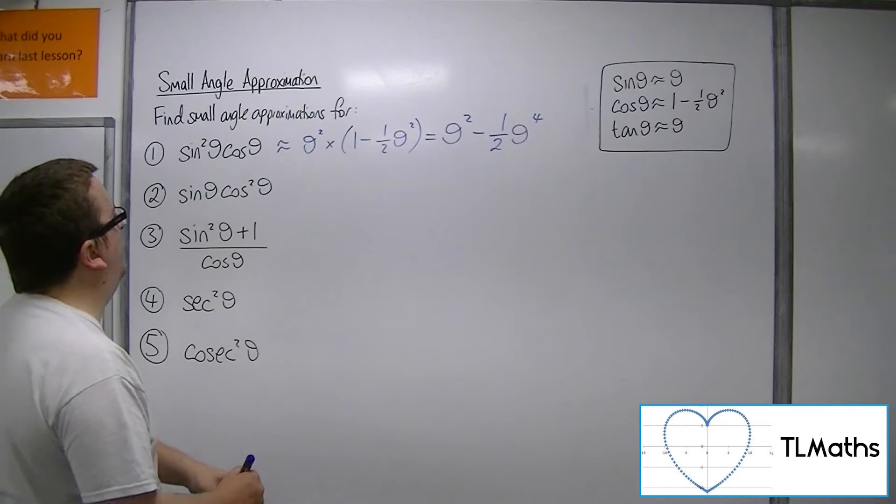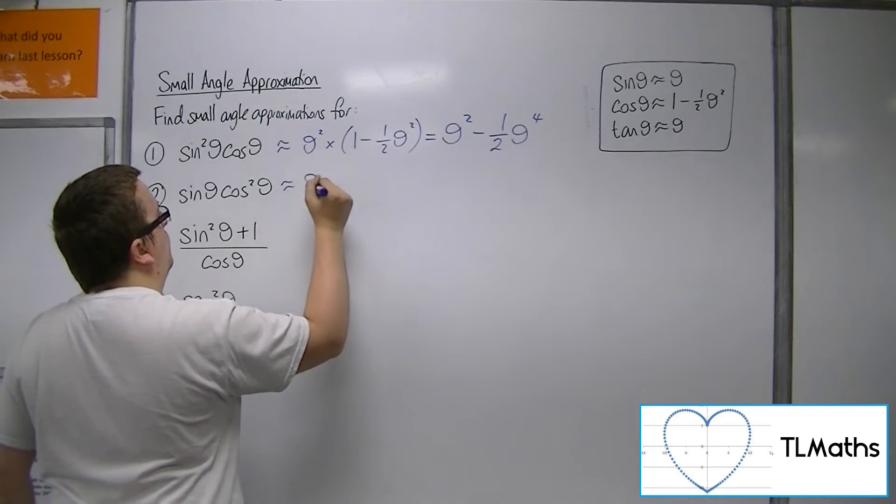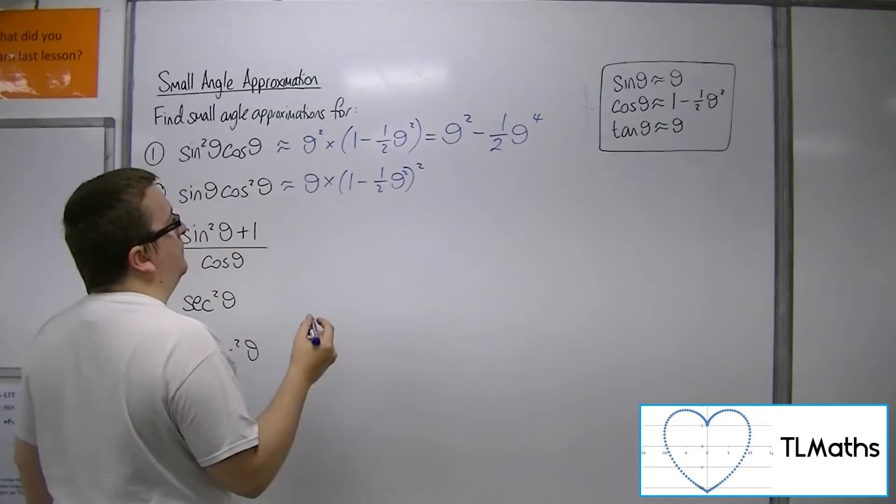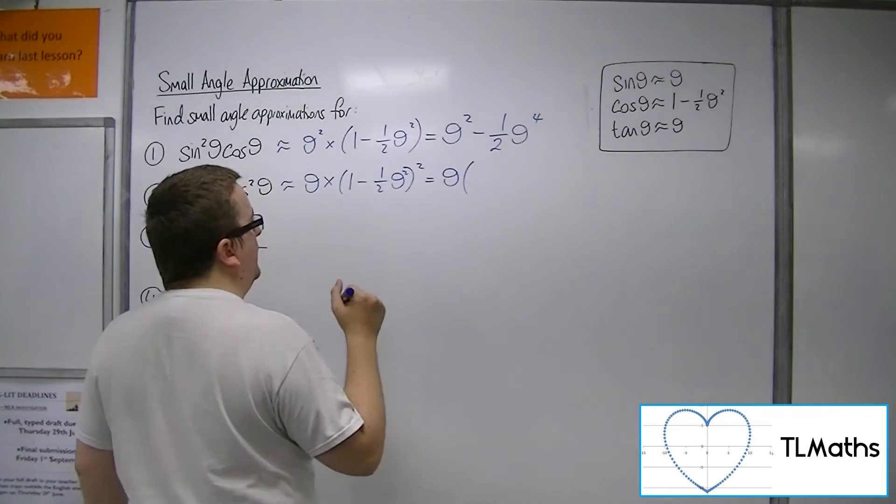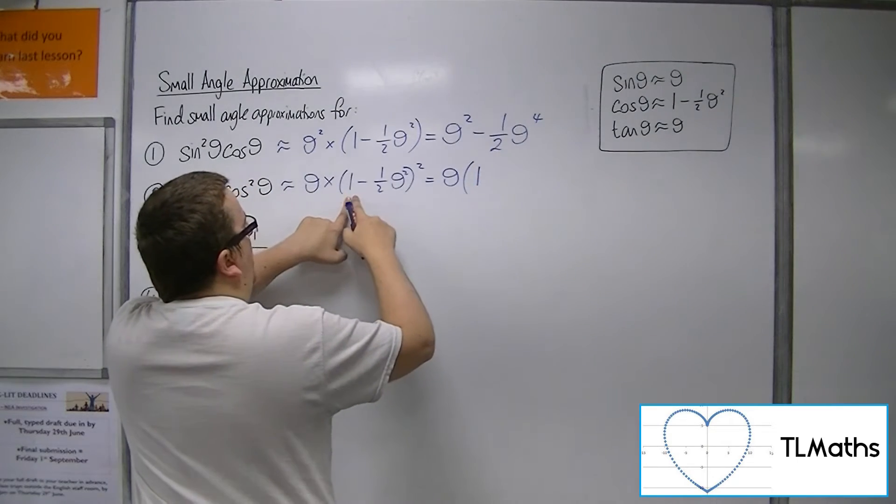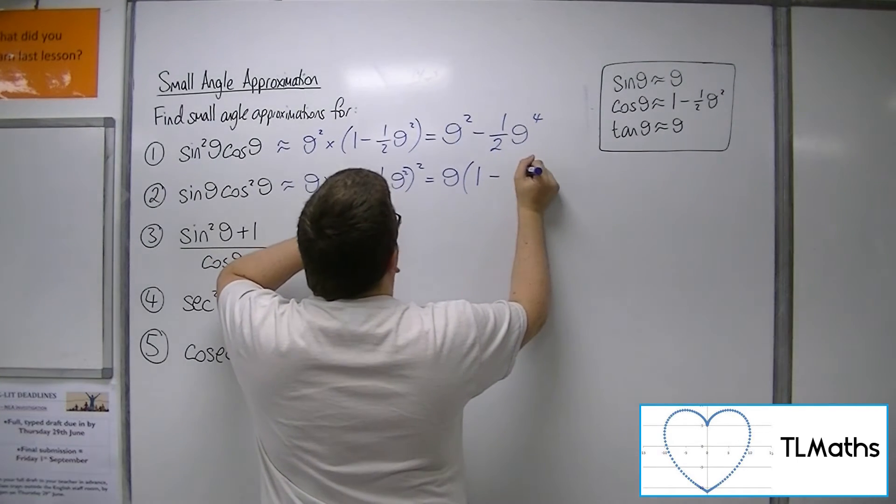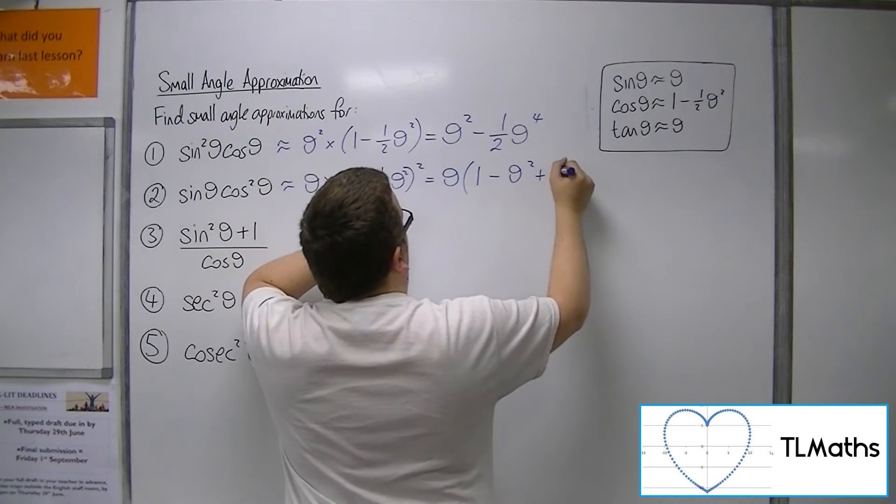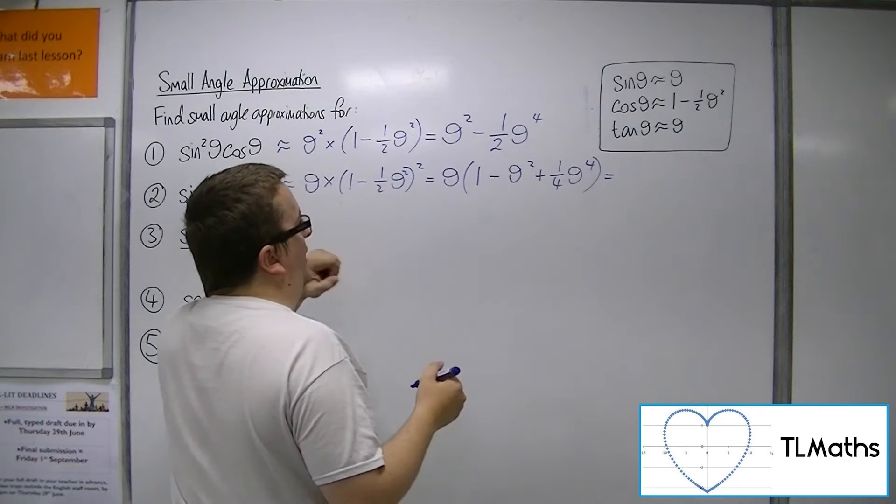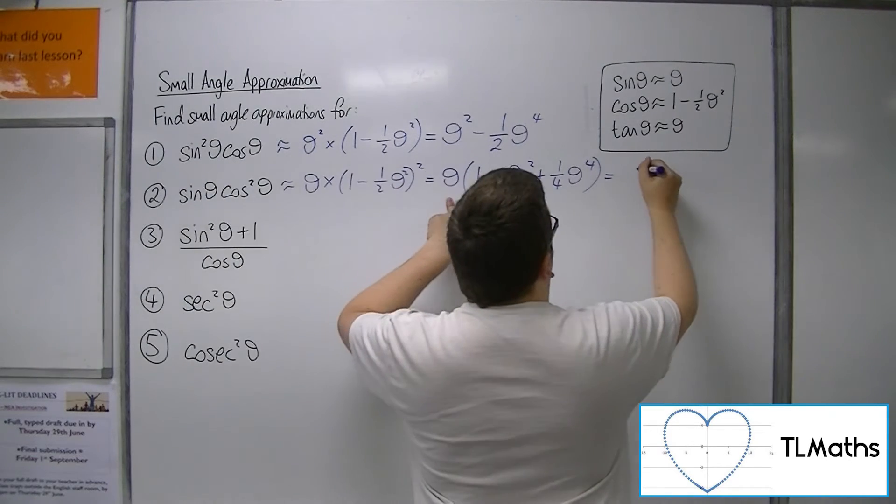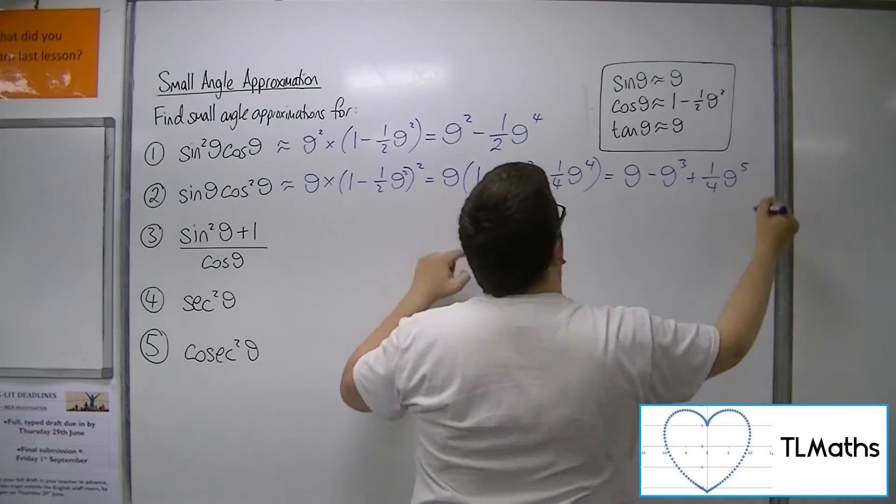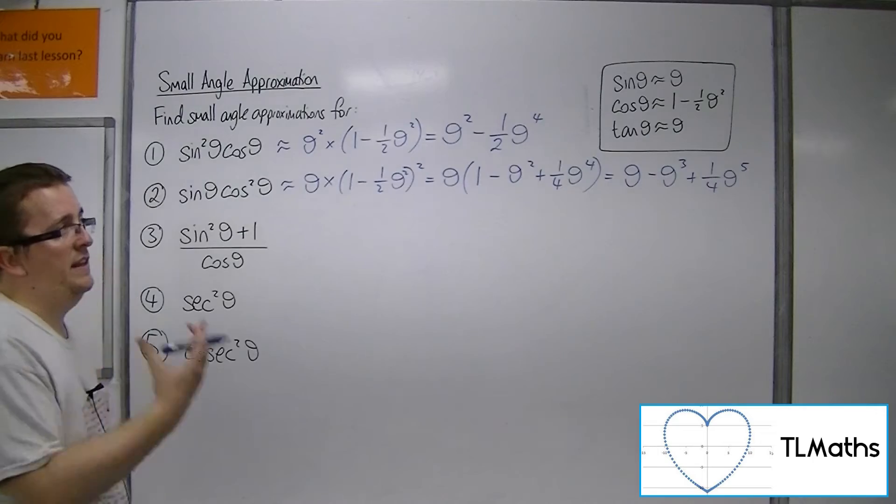Now sine theta cos squared theta would be approximately theta times by 1 minus 1 half theta squared squared. So that's theta times, now expanding this, we would have 1, then we would have take away theta squared and plus a quarter theta to the 4. So that's expanding that quadratic. And then multiplying through by theta, we'd have theta take away theta cubed plus a quarter theta to the 5. And obviously also in this case, theta cubed and theta to the 5 will be very small by that point.